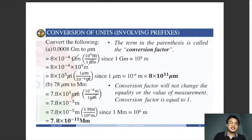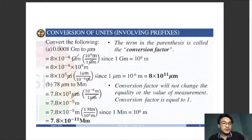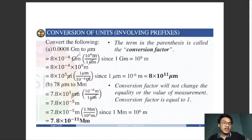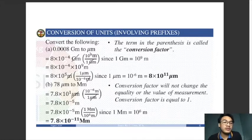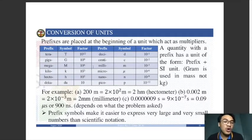Now converting units involving prefixes: convert 0.008 gigameters to micrometers. First, express 0.008 in scientific notation: 8 times 10 to the negative 4 gigameters. We need to convert gigameters to meters. From the prefix table, 1 gigameter equals 10 to the 9 meters. We use this as our conversion factor.